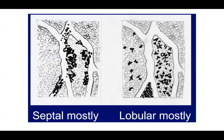On the left, you have mostly a septal paniculitis — inflammation traveling along the septa with some spillage into the lobule. Whereas with lobular paniculitis, you mostly have inflammation within the fat lobules themselves and not really tracking as much along the septa.